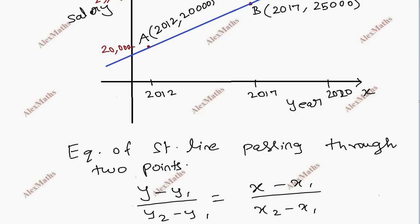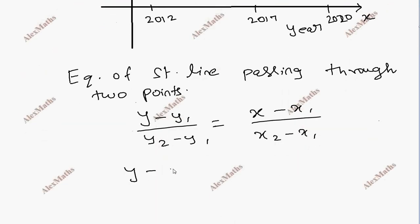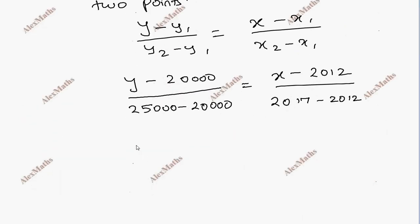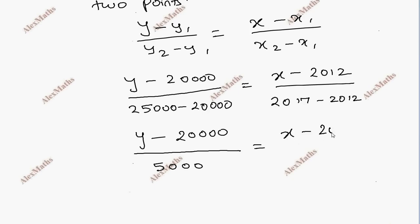The formula is: (Y minus Y1) divided by (Y2 minus Y1) equals (X minus X1) divided by (X2 minus X1). Substituting: (Y minus 20,000) divided by (25,000 minus 20,000) equals (X minus 2012) divided by (2017 minus 2012). That gives us (Y minus 20,000) over 5,000 equals (X minus 2012) over 5,000.